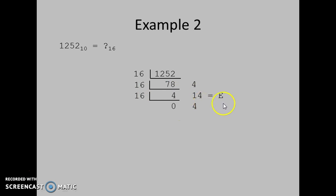And in hexadecimal number system, 14 is equivalent to capital E. We will write the answer in reverse order. Therefore, 1252 base 10 is equivalent to 4E4 base 16. Thank you.